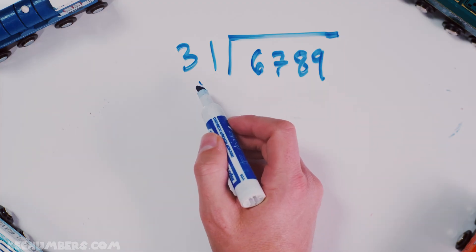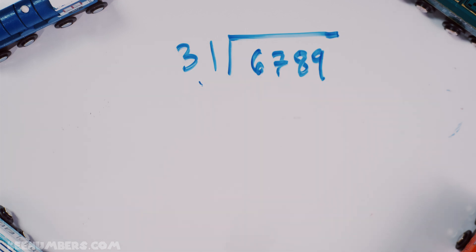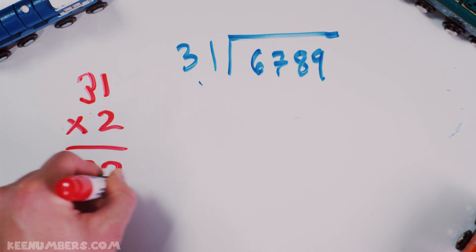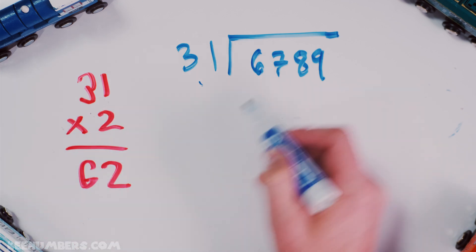Step 1, estimate. 31 goes into 67. How many times? Well, let's estimate. Notice, 31 times 2 is equal to 62. That's pretty close to 67. So you're gonna put your 2 up here.